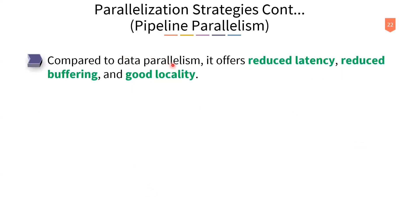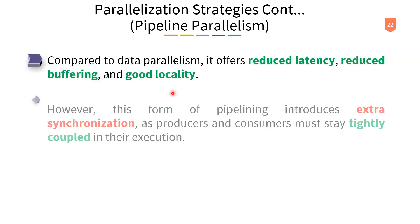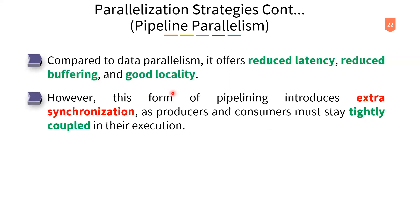Compared to data parallelism, pipeline parallelism offers reduced latency, reduced buffering, and better data locality. Data availability improves as well.